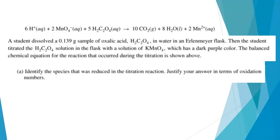So part A says, identify the species that was reduced in the titration reaction. Justify your answer in terms of oxidation numbers. So hopefully you know all your oxidation number rules. We want to find the species that was reduced. We want to find the species that starts with a higher oxidation number and goes to a lower oxidation number because it gained electrons. That's what it means to undergo reduction.